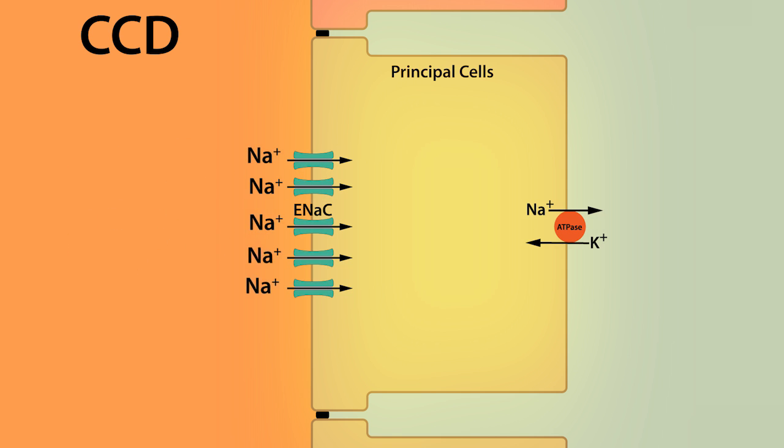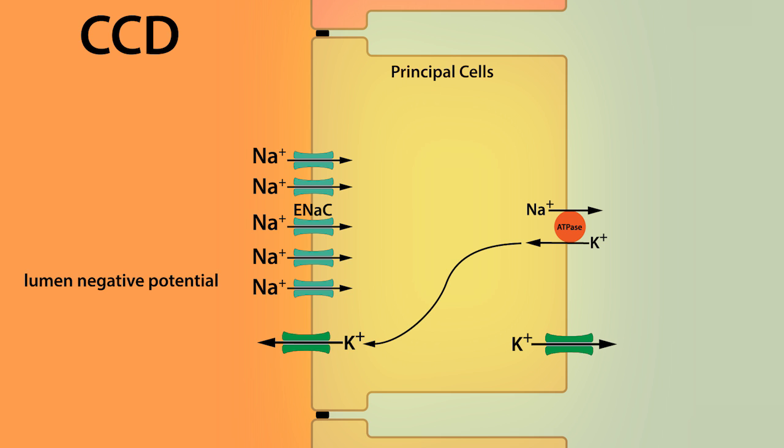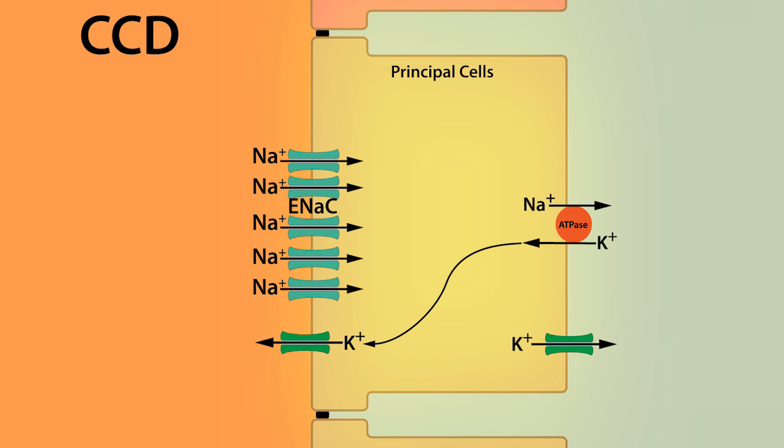As sodium is reabsorbed by ENaC, it creates a lumen negative potential, which establishes a driving force for the secretion of positively charged ions like potassium. This is important because like the cells in the thick ascending limb, principal cells express potassium ion channels in the apical and basolateral membrane. Because of this, anything that increases ENaC-dependent sodium reabsorption can lead to increased potassium secretion and hypokalemia.